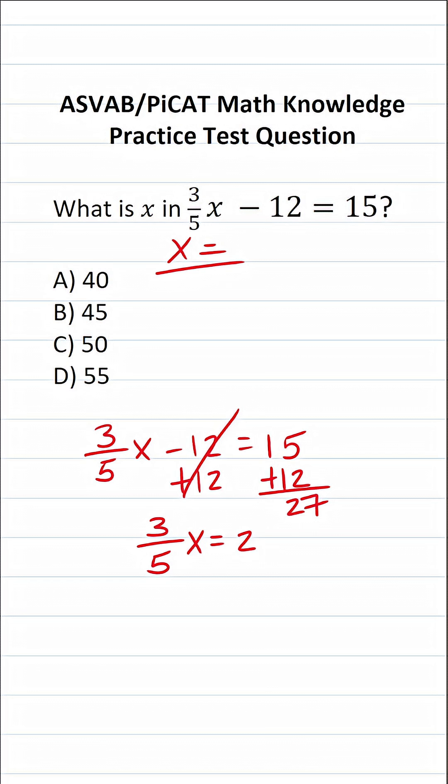So this says 3/5x equals 27. In order to clear the 3/5 in front of the x, we're going to multiply both sides of this equation by the reciprocal of 3/5, which is 5/3. In doing so, this crosses out here and here, leaving me with x over here.